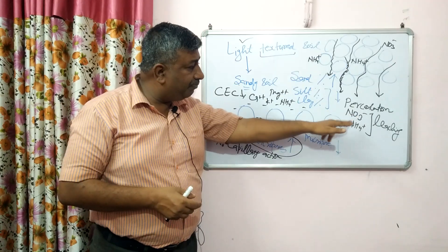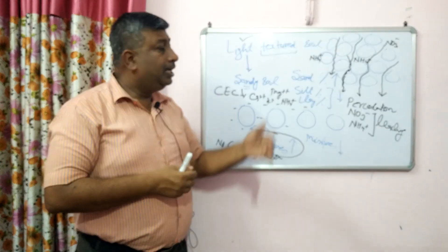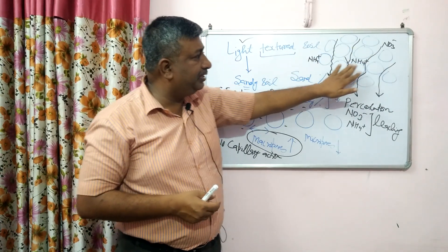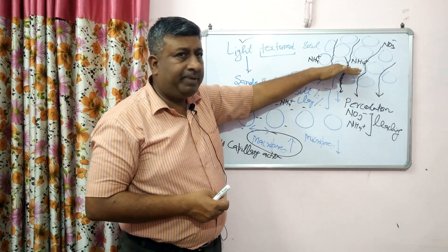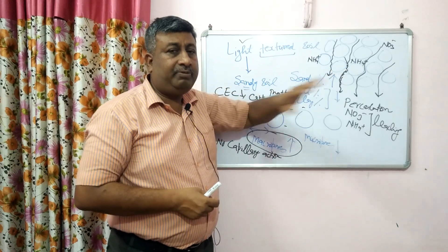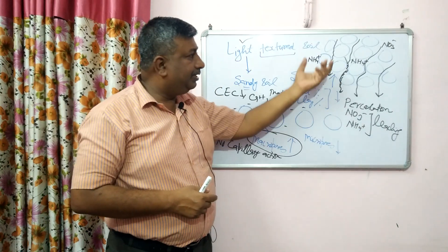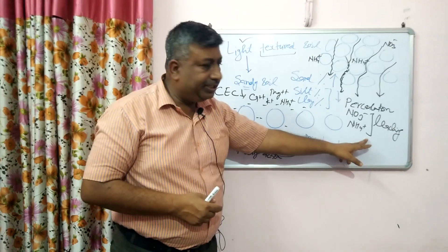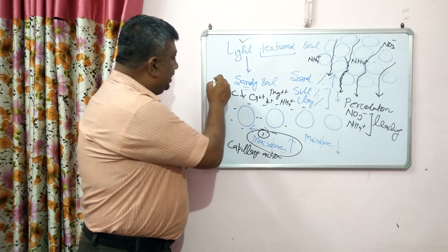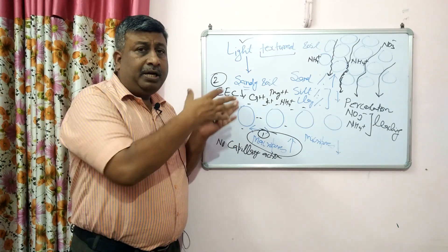Nitrate remains in the soil solution and because macropores dominate, it percolates. In contrast, in heavy textured clay soil, CEC is high so ammonium is retained, there is less percolation, and nitrate also remains in the soil solution — so both are available to the plant with no deficiency. In sandy soil, the two important factors responsible for nitrogen deficiency are: number one, high proportion of macropores, and number two, low CEC — both cause leaching of nitrate and ammonium ions.